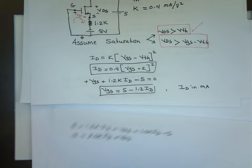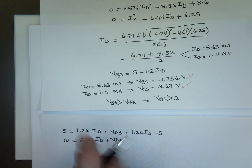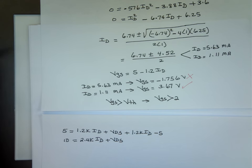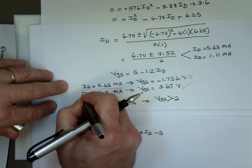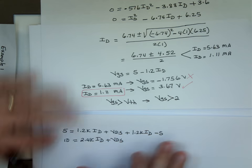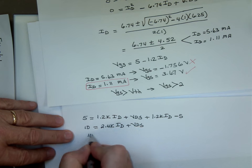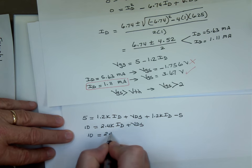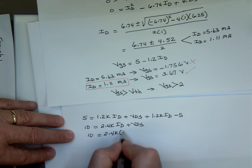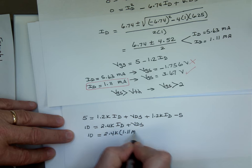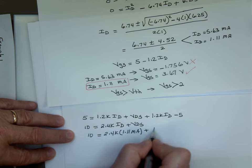Well, we know what I sub D is, right there. We said I sub D is 1.11 for this case. 1.11 milliamp. 10 equals 2.4K times 1.11 milliamp plus VDS. Can we find what VDS equal to?